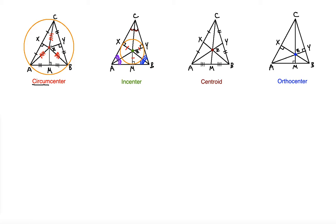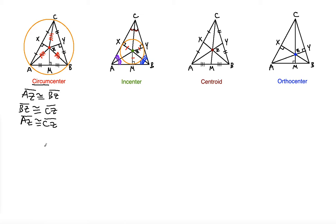All the segments from the circumcenter point Z to the vertices are radii: ZC, AZ, and ZB are all radii. Since there is only one radius, these three segments inside the triangle are congruent. So AZ is congruent to BZ, BZ is congruent to CZ, and AZ is congruent to CZ as well.